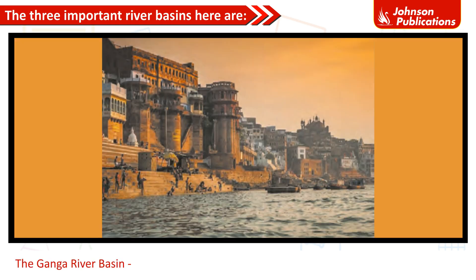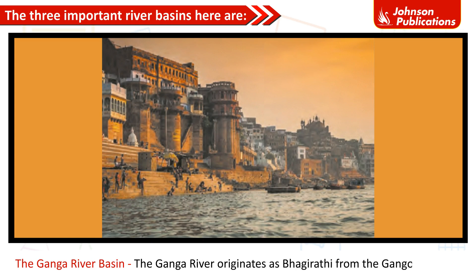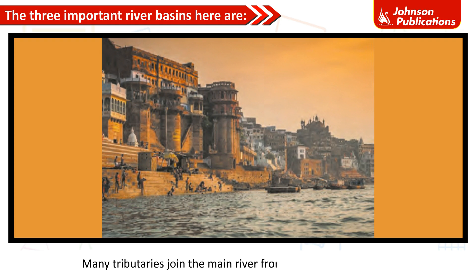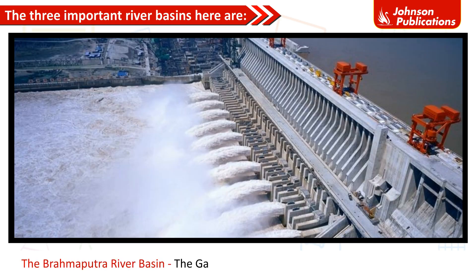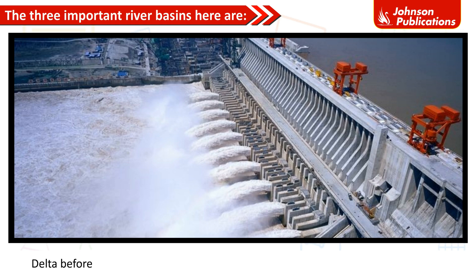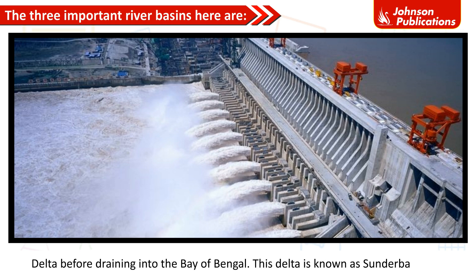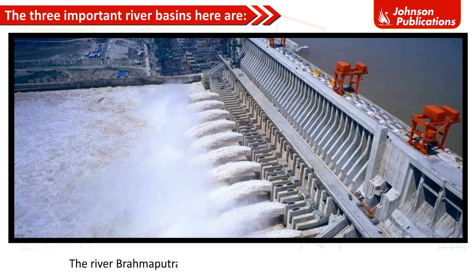The Ganga River originates as Bhagirathi from the Gangotri Glacier. Many tributaries join the main river from its right and left banks, including Gomti, Ghagra, Gandak, Kosi, Chambal, Sindh, Betwa, and Son. The Ganga and the Brahmaputra form the world's largest delta before draining into the Bay of Bengal, known as the Sundarbans Delta. The Brahmaputra originates in Tibet where it is called Tsangpo.